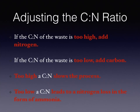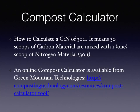Adjusting the C:N ratio by increasing or decreasing the carbon in relation to the nitrogen enables us to control the composting process. If the C:N of the waste is too high, add nitrogen. If the C:N is too low, add carbon. Too high a C:N slows the process, and too low a C:N leads to nitrogen loss in the form of ammonia. A compost calculator is helpful here. A C:N of 30:1 means 30 scoops of carbon material are mixed with one scoop of nitrogen material. An online compost calculator tool is available from Green Mountain Technologies.